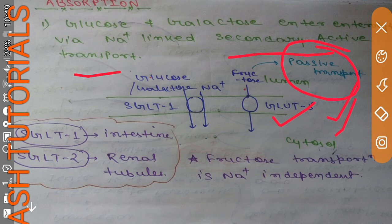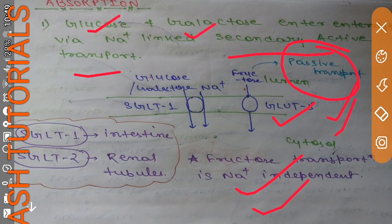No energy is required to transport fructose into the cytosol. Fructose transport is also sodium independent, because it does not require sodium. Sodium is required only by glucose and galactose for their transport.